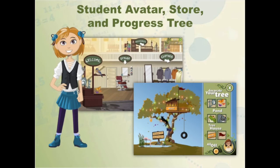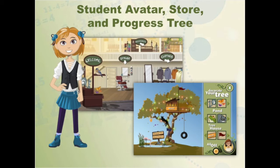The avatar store has new clothing, a stylist, and even accessories to really make the avatar look like the student. The progress tree is another way that students can not only display but monitor their fact fluency growth.